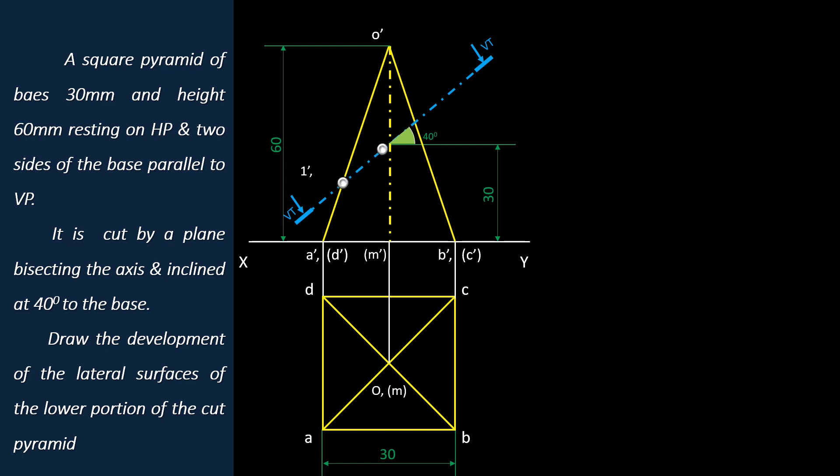Moving along the section line and meets the edge OB and OC. Here OB is visible, so section plane cuts OB at point 2. Moving along the section plane and return back to get the section points on the hidden edges. Section plane cuts the edge OC at point 3 and cuts the edge OD at point 4.